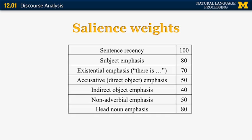I'm going to go through an example based on a paper by Lappin and Leass from the early 90s, where for the very first time they looked at the computational treatment of coreference. They manually came up with a list of rules that, given a list of candidates for anaphoric resolution, tell you what properties make them more likely to be the correct antecedents. Here are seven properties that Lappin and Leass were looking at. Sentence recency is the most important feature — if an entity was introduced in the same sentence as the anaphoric expression, it is more likely to be the correct antecedent. Other high-scoring features include subject emphasis.